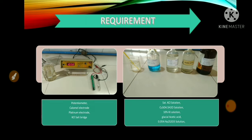Chemicals required for the estimation of copper are: saturated KCl solution, copper sulphate pentahydrate solution, 10% KI solution, glacial acetic acid, and 0.05 normal sodium thiosulphate solution.